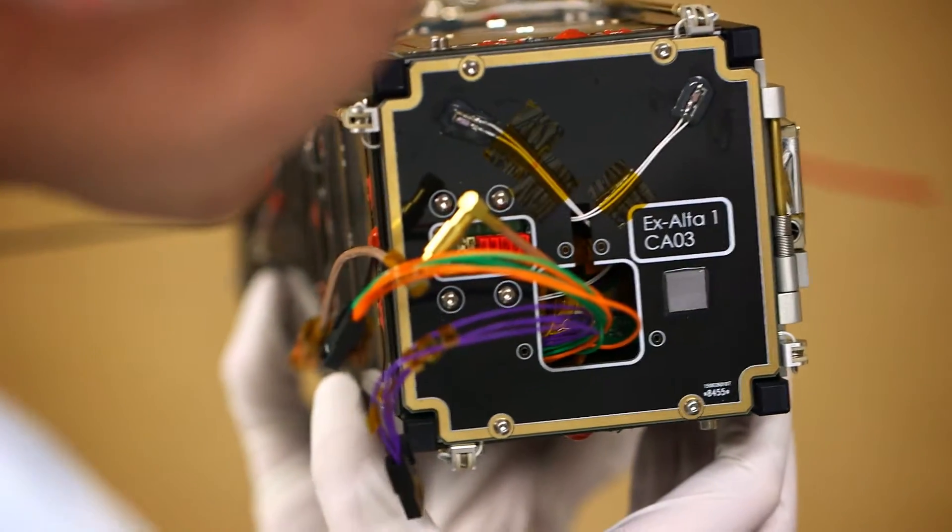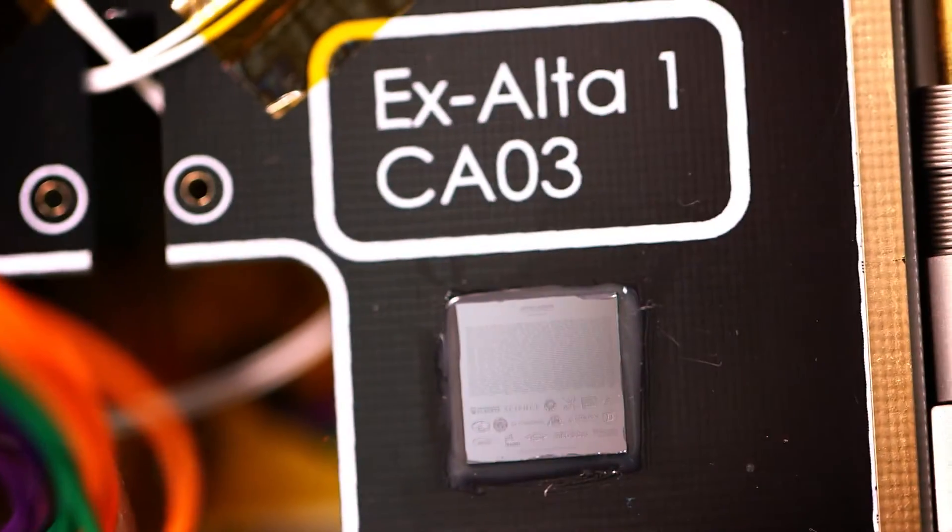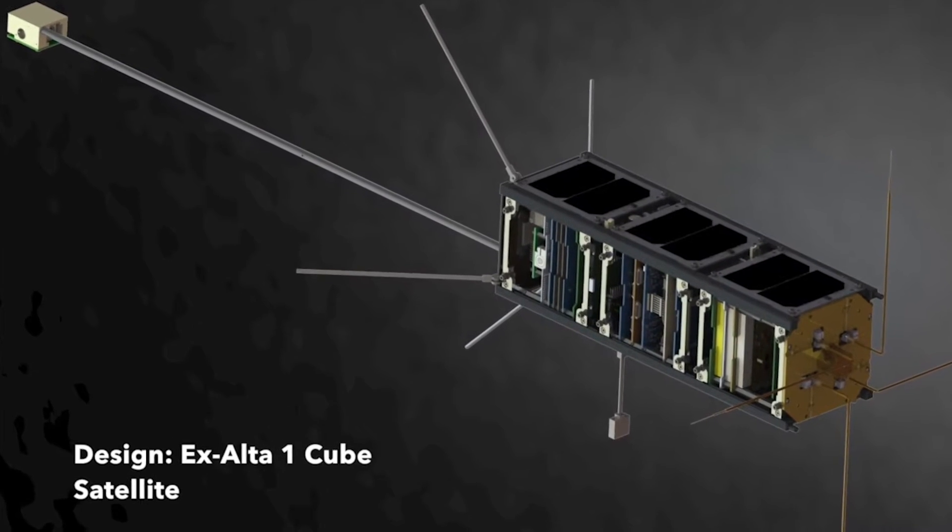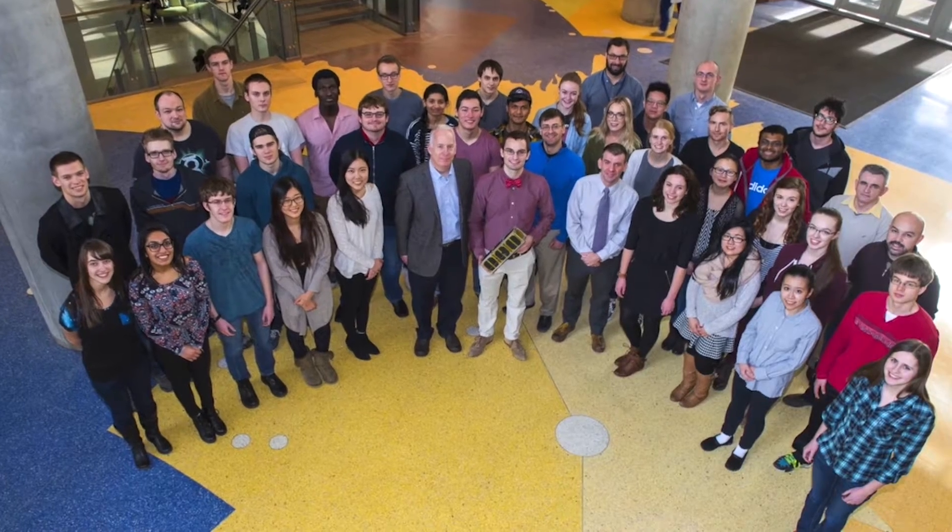The launch of AlbertaSat will represent the first ever Made in Alberta satellite. The first time that a spacecraft has been built here in the province of Alberta by anybody. We are going to be one of the first Canadian University student teams to put a Cube satellite into space.